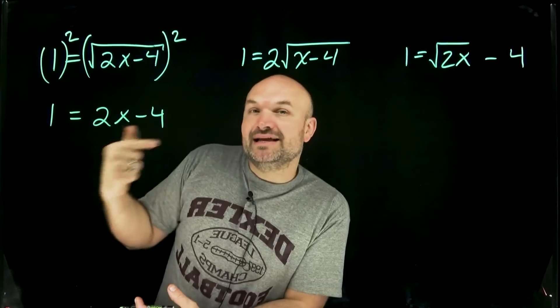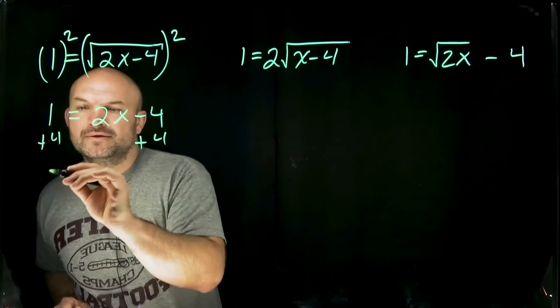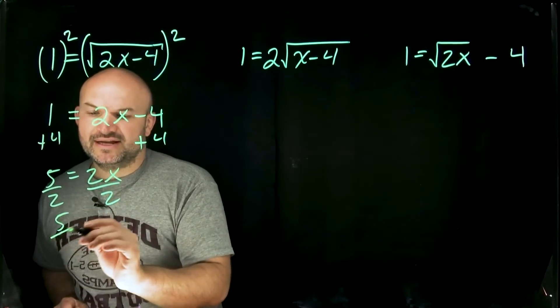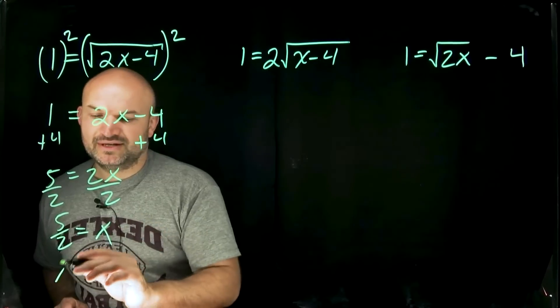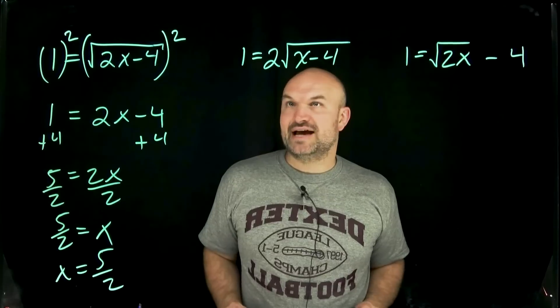So now I can just undo my inverse operations using the reverse order of operations. We add a 4 first on both sides and then I divide by 2 on both sides. So I get 5 halves is equal to x and we can flip that around if we want to go ahead and write it that way. So x equals 5 halves.